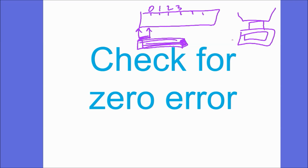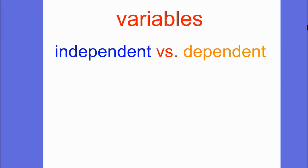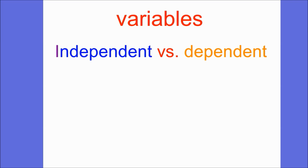People often ask about variables. What is the difference between an independent variable and a dependent variable? The independent one is the one that you control, and the dependent one depends on what you control — it depends on the independent variable. One person pointed out that the independent variable has an 'I' in it, because 'I change it' — I'm in control of it.